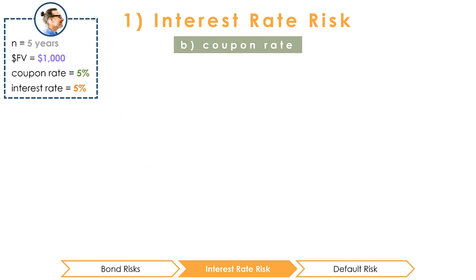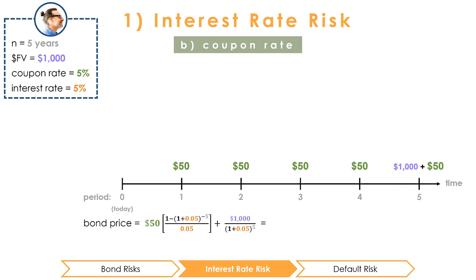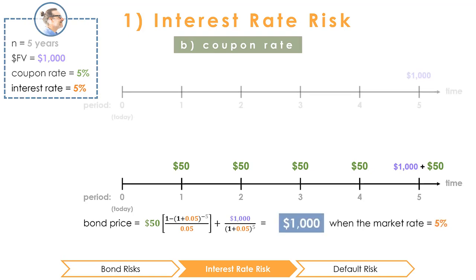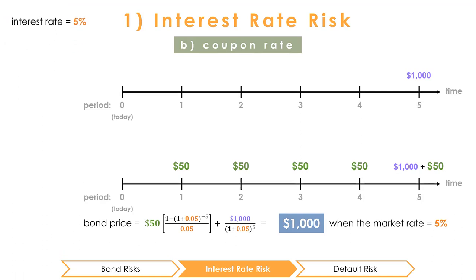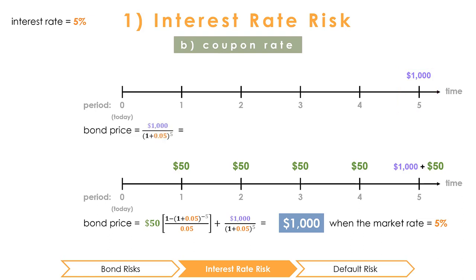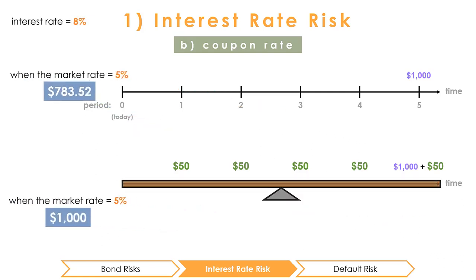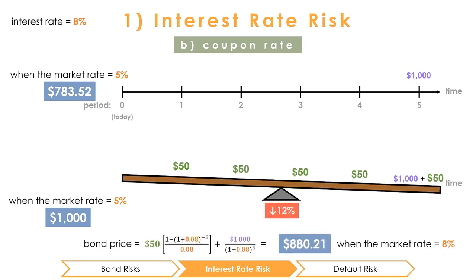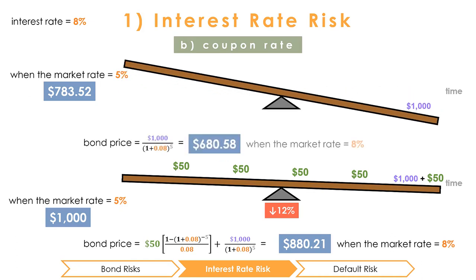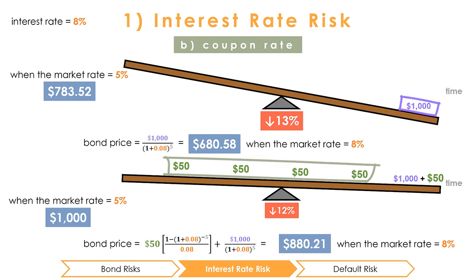Bonds with lower coupon rates are more sensitive to interest rate changes since the coupon payments are smaller relative to the principal payment at the end. Let's revisit our man bun bond example. When we received a $50 annuity payment each year for five years, this bond was valued at $1,000. Compare this to a zero coupon bond — a zero coupon bond does not pay any coupons; instead the value comes solely from the principal payment at the end. A zero coupon bond receiving $1,000 in five years would be worth $783.52, or 1,000 / (1 + 0.05)^5. If the market rate increases from 5% to 8%, the original coupon bond falls by 12% to $880.21, while the zero coupon bond falls by 13% to $680.58. The zero coupon bond is more sensitive to interest rate changes since more of its value comes in later periods that are more heavily discounted.